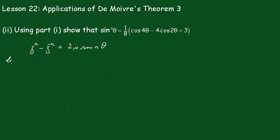Now we'll let n equal 1 so we get Z minus Z^(-1) equals 2i sin θ. Now we need a power of 4 so we'll raise both sides to the power of 4.